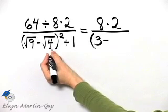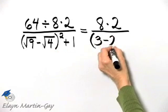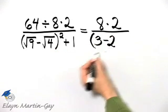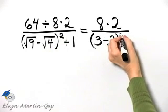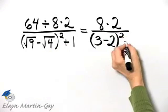Then minus, what is the square root of 4? The square root of 4 is 2 because 2 times 2 is 4. And then I have close parentheses squared.